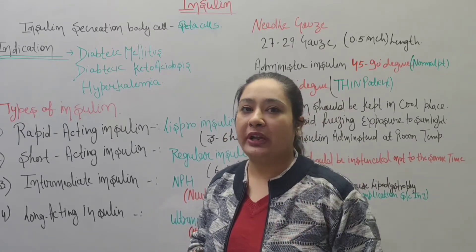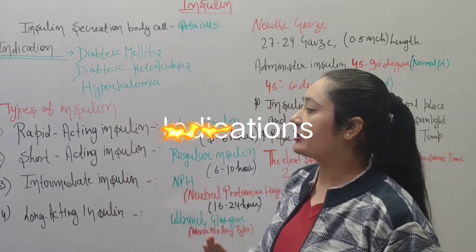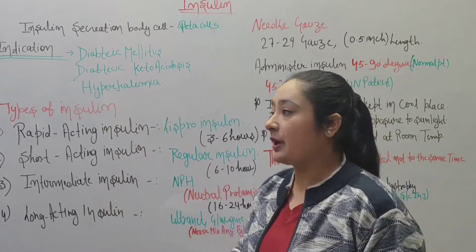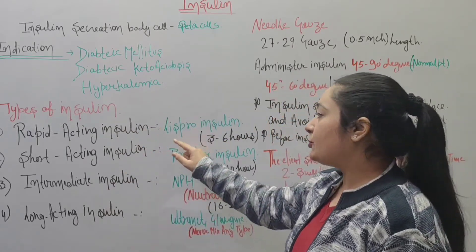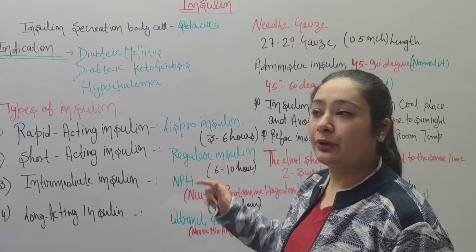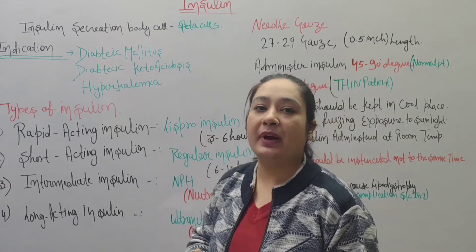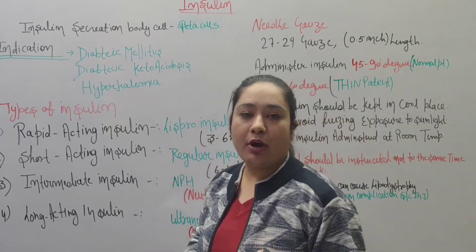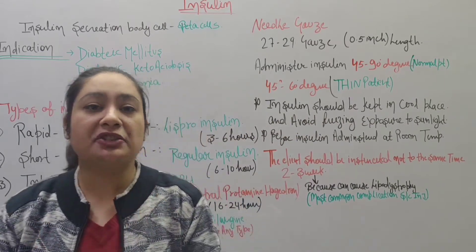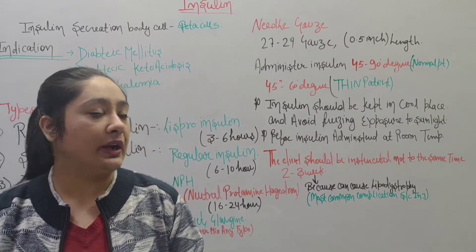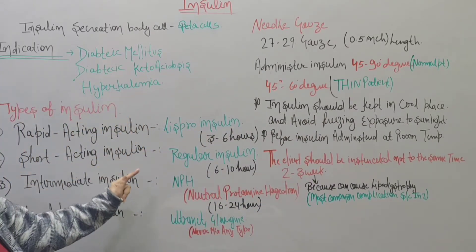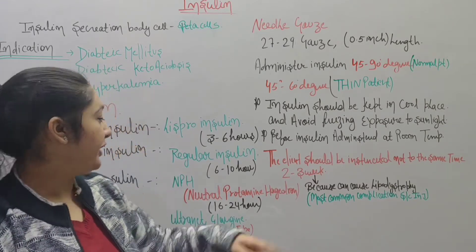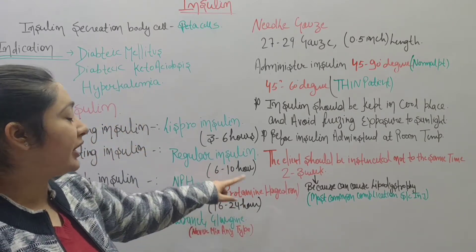Insulin is of 4 types. The first type is rapid-acting insulin, with a duration of 3 to 6 hours. The second type is short-acting insulin, also called regular insulin, with a duration of 6 to 10 hours.